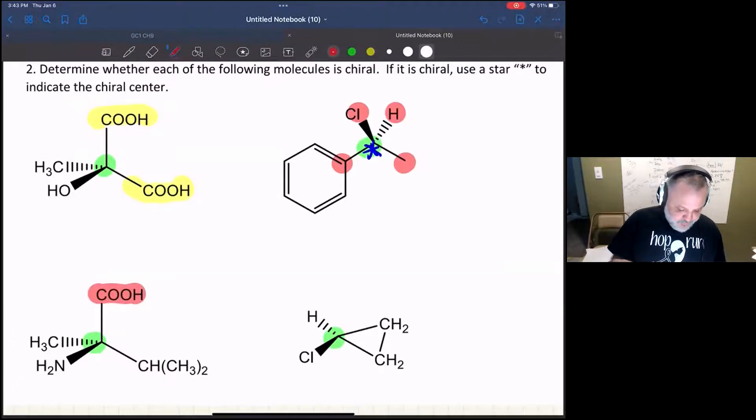Let's take a look at the next one. We've got a carboxylic acid group, we've got an amine group, we've got a methyl group, and we've got an isopropyl group. Those are all three different—this guy is chiral as well.